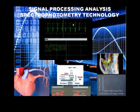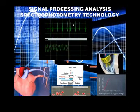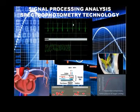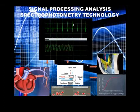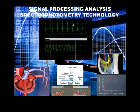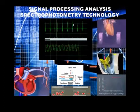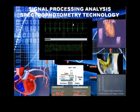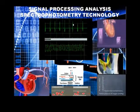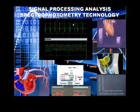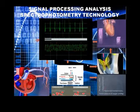The heart rate variability is the signal processing analysis of the time variation of the heart rate output and provides indicators about the autonomic nervous system activity.